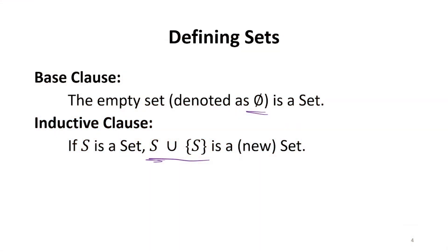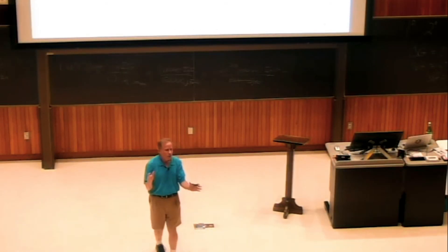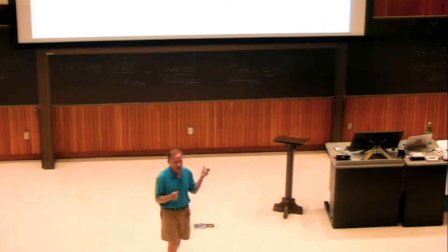Is that going to allow us to build up interesting sets? So certainly it's not going to allow us to build everything we intuitively think of as a set today, right? So we think of the set containing 1, 2, 3 as a set. This is not going to allow us to build. Well, will it allow us to build something that we can think of as the set 1, 2, 3?